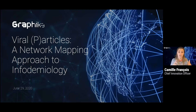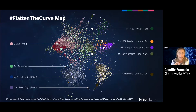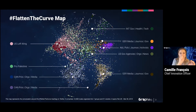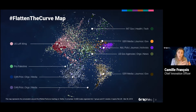So our team does cartography. We basically draw maps of the internet, and they look like this. This is a map of the online conversation around the 'flatten the curve' hashtag. We made it in March in order to understand who was engaging with that campaign at that time. Each dot on this map is a social media account. The size of the dot represents the amount of attention that this network is getting from the rest of this specific network.